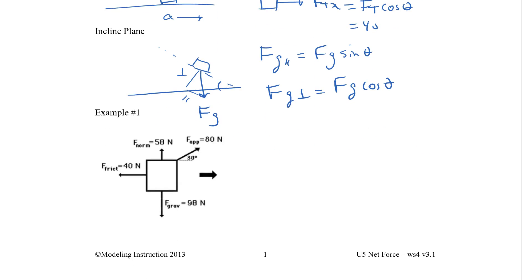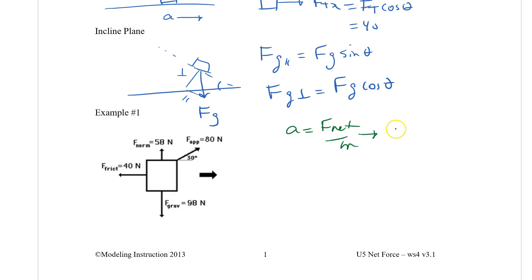Now we'll apply Newton's second law: acceleration equals F-net over m, or equivalently F-net equals ma. We're going to use that with components. Let's look at our first example — the force diagram is already drawn for us.